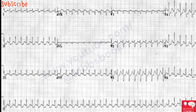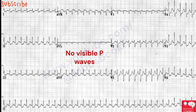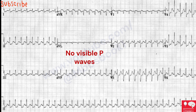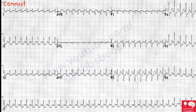ECG interpretation: narrow complex tachycardia around 220 beats per minute, no visible P waves, subtle notching of the terminal QRS in V1 — a pseudo-R wave — and widespread ST depression. This is a common electrocardiographic finding in AVNRT.